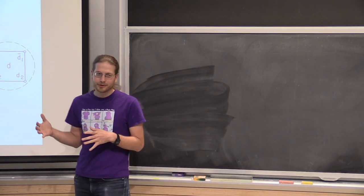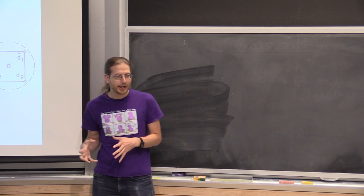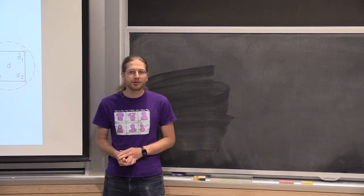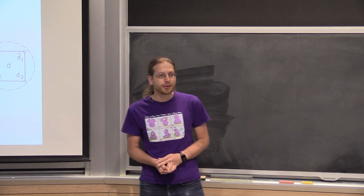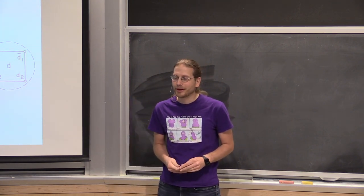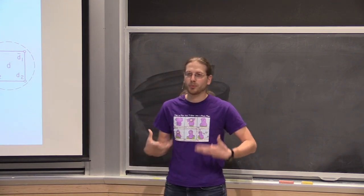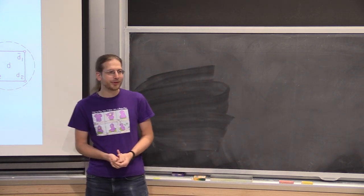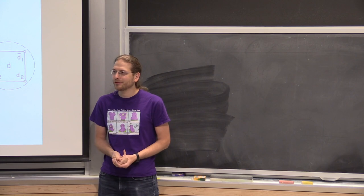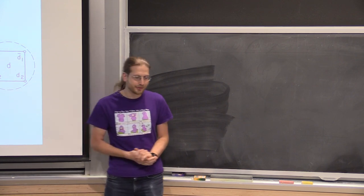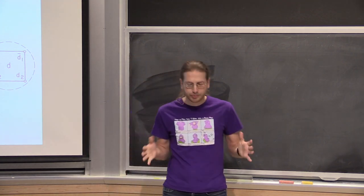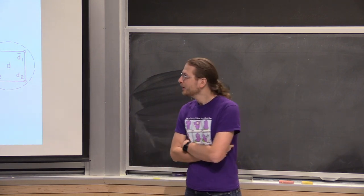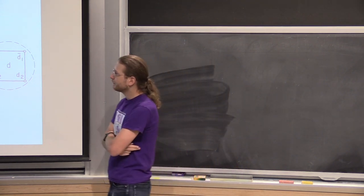We've spent a lot of time talking about 3SAT, most recently Hamiltonicity, and before all that 3-Partition — which are the most popular and most useful ways of doing NP-hardness reductions. But there are a few others that are good to know and sometimes relevant. Each one is a little bit smaller in content, so we're just going to lump them all together. We'll start with vertex cover.